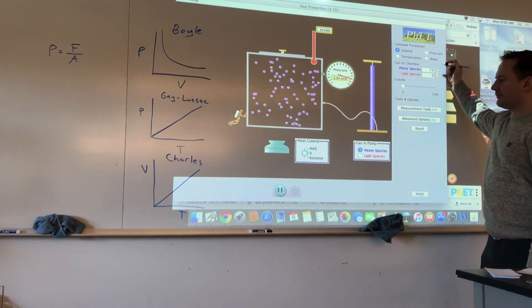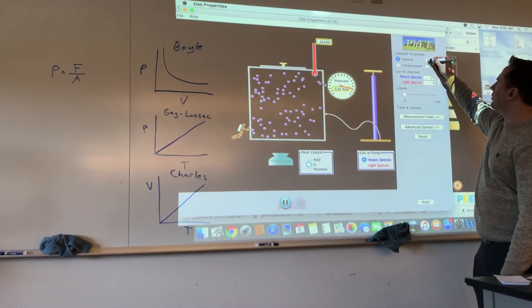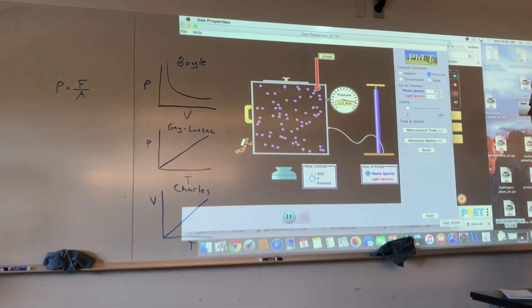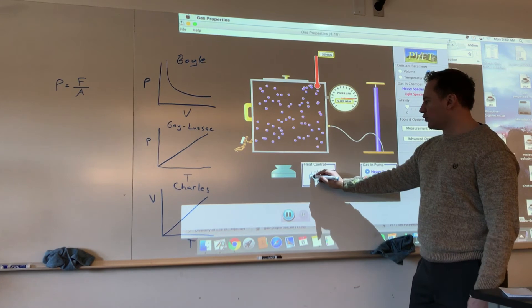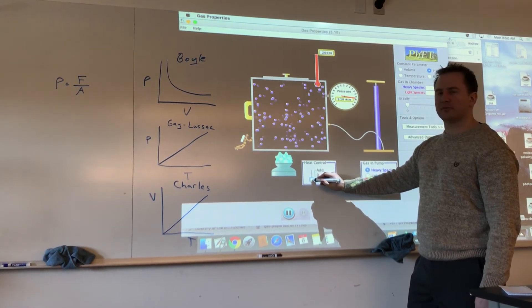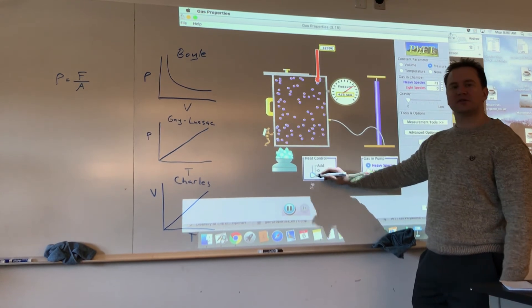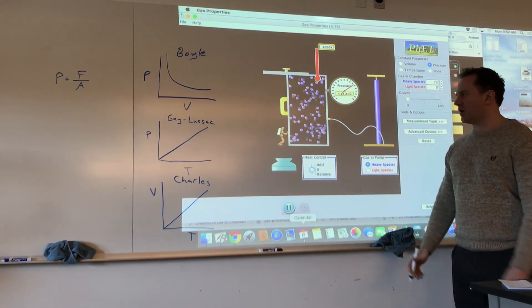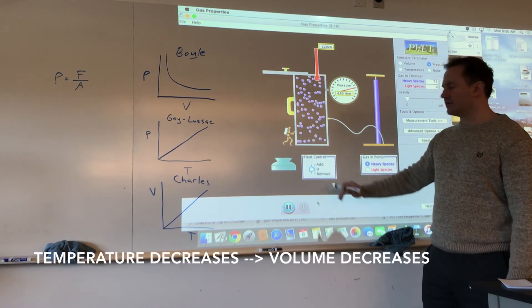The last law I want to look at is Charles Law which relates to volume and temperature. So now I'm gonna hold the pressure constant. So the pressure is gonna hover right around here. As I cool this down, because it's already a pretty high temperature, you're gonna see that the container starts to compress or get smaller. So at a constant pressure, if you decrease the temperature, you decrease the volume.